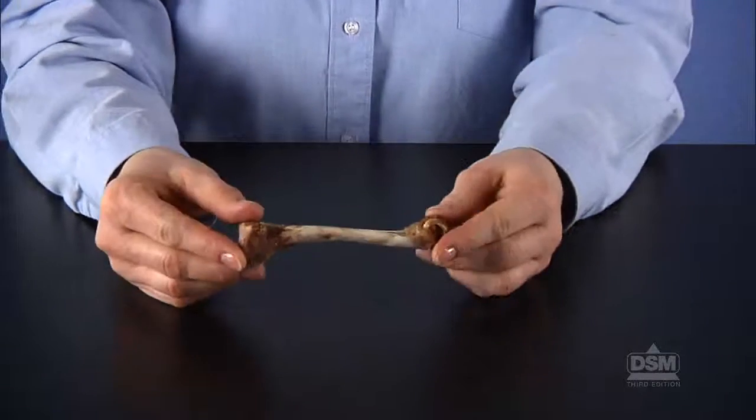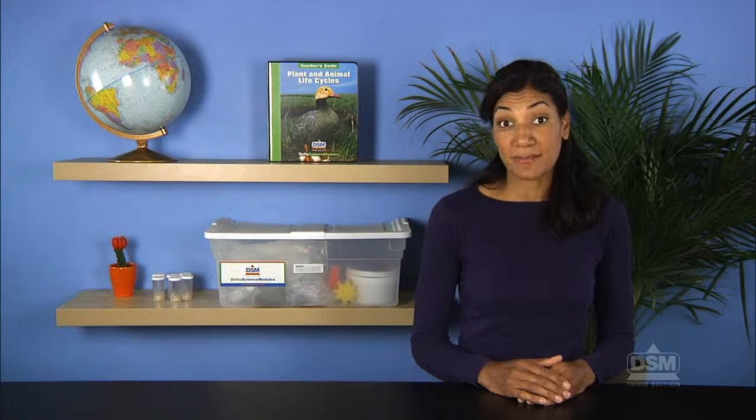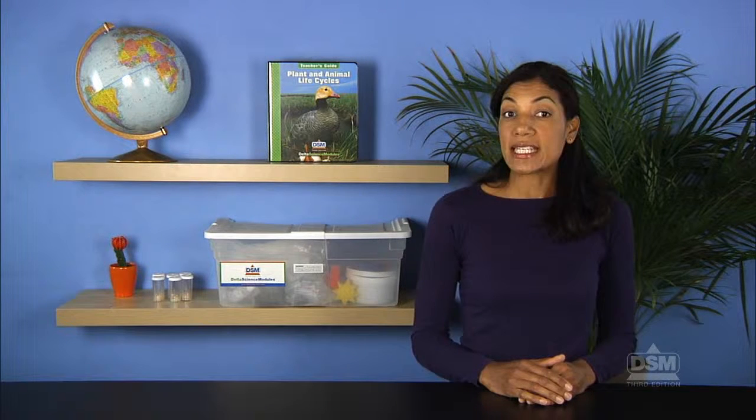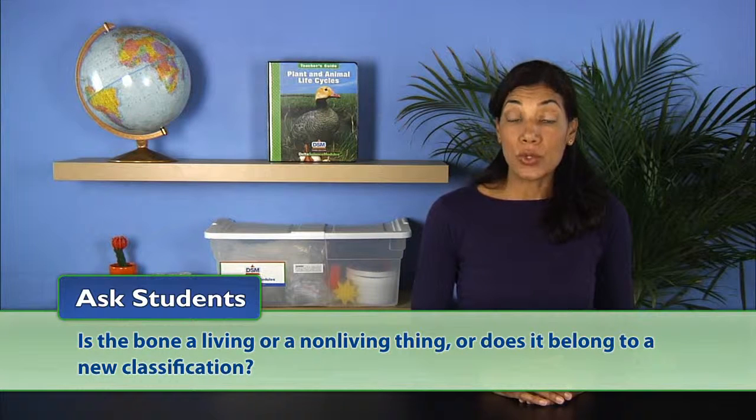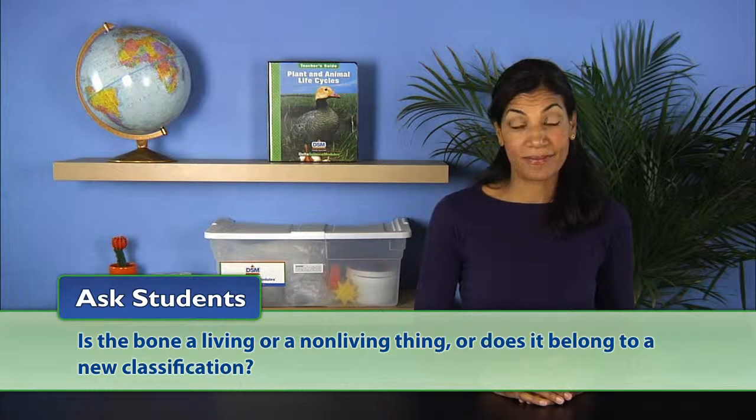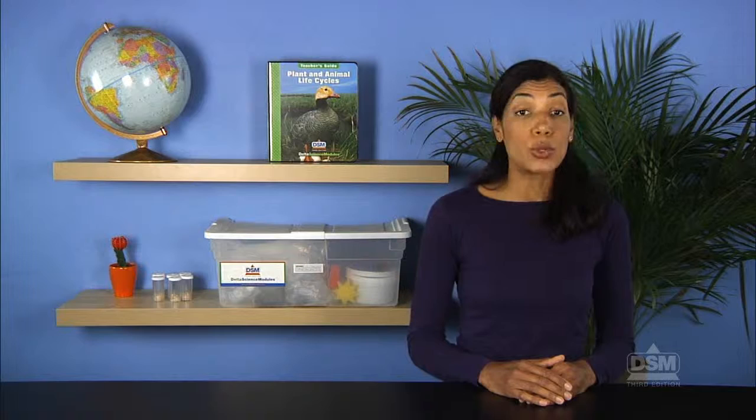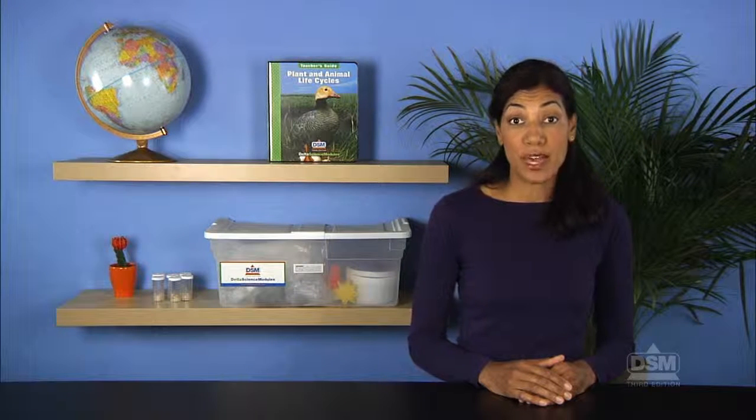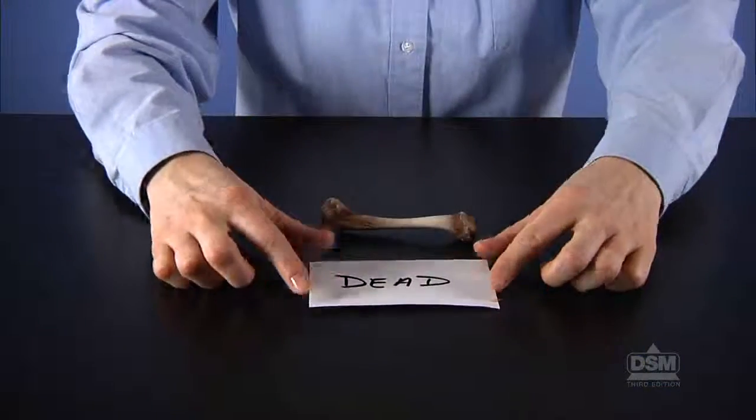Then focus the students' attention on the chicken bone. Students should note that the bone came from a living thing, a chicken. Introduce the word dead and explain that a dead object is something that is no longer alive. Ask students, is the bone a living or a nonliving thing, or does it belong to a new classification? Lead students to understand that because the chicken bone is neither living nor nonliving, it belongs to a third category, dead. Place the bone in a third distinct location on the table.